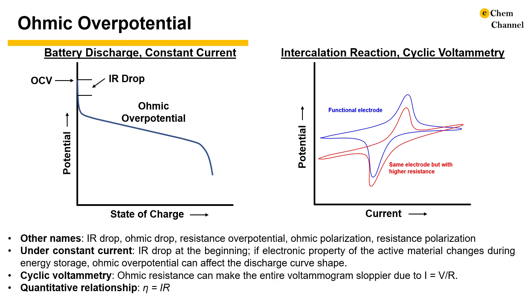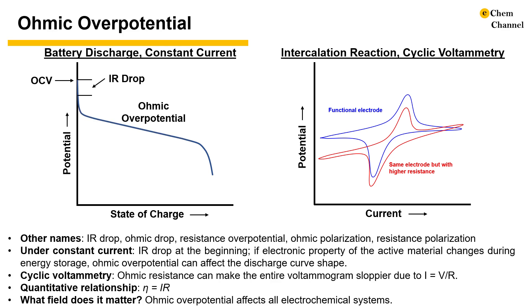Ohmic overpotential can be quantified simply using Ohm's law. Since internal resistance appears in every electrochemical system, it is always important to optimize devices to lower ohmic overpotential.